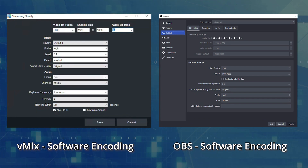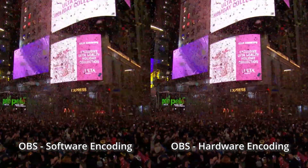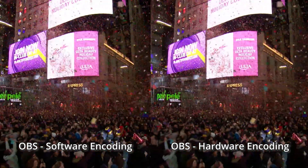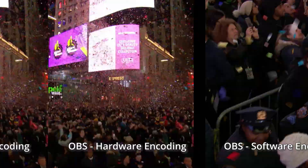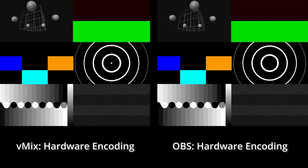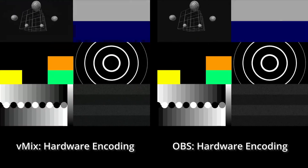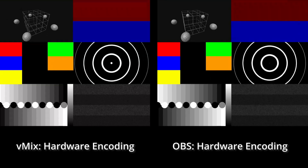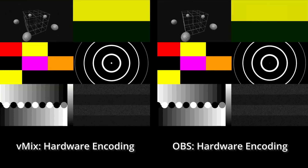Where the software x264 streams struggle a bit is in random noise or confetti. When either vMix or OBS are using NVENC hardware encoding, the static test and confetti are both cleaner. Pausing on a frame of confetti, you can see that it's generally clearer in hardware. However, this is really tricky to pick up in real time. In my opinion, vMix's NVENC quality is worse than OBS — I can just see that vMix's hardware encoding shows more color banding.